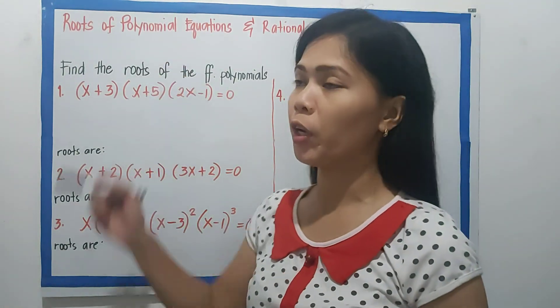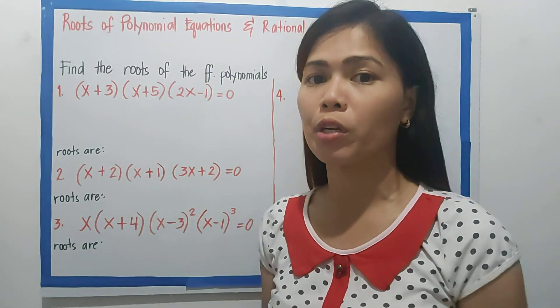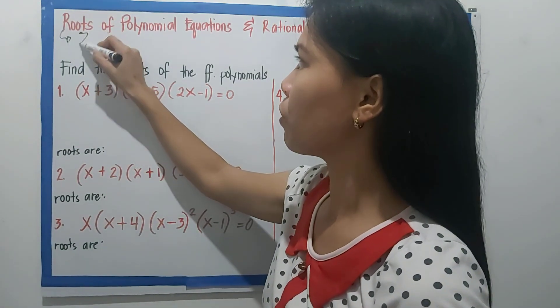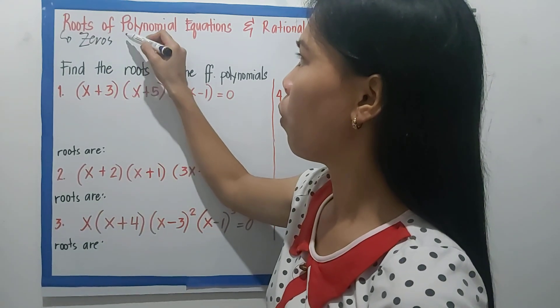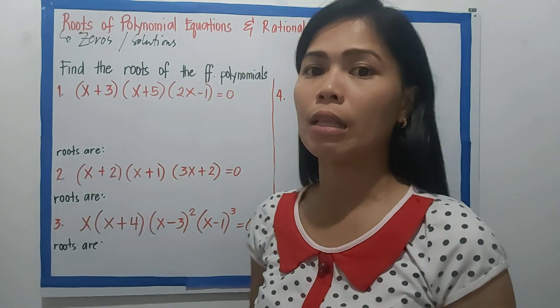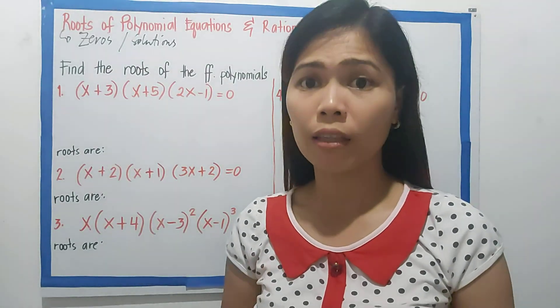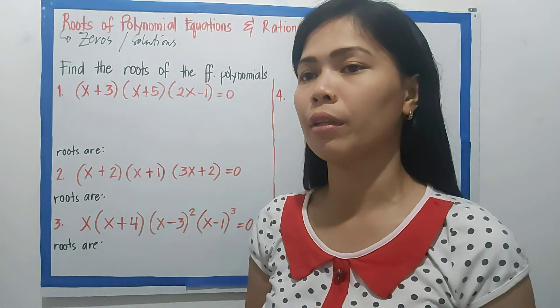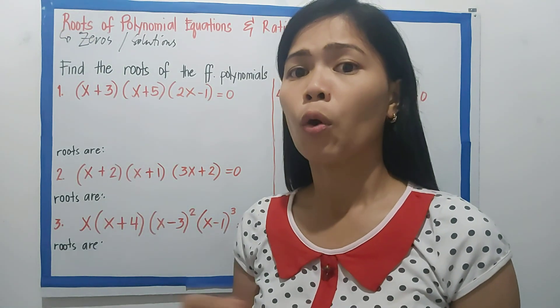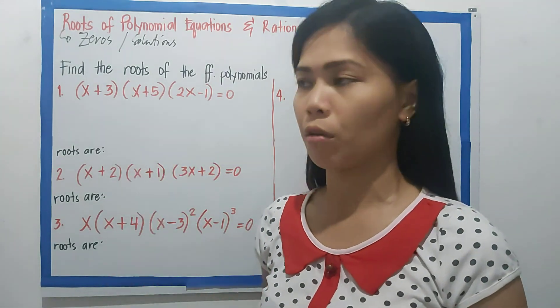When we speak of roots of polynomial equations, some books or speakers mention it as the zeros or solutions. These are actually the values of x. And if we try to graph the curve of a polynomial function, these are the points in the x-axis where the curve passes through.